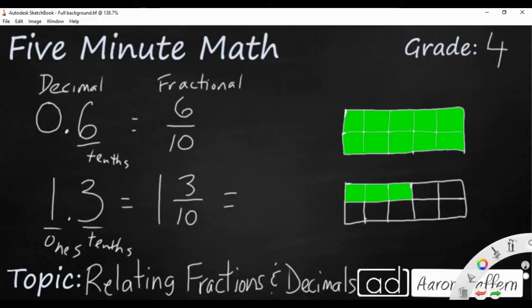You can also write it as an improper fraction if you wanted to because we know that 1 and 3 tenths can also be written with simply tenths. But if you count the tenths here we actually have 13 tenths. So 1 and 3 tenths is the same as 13 tenths which is written in decimal form here as well.